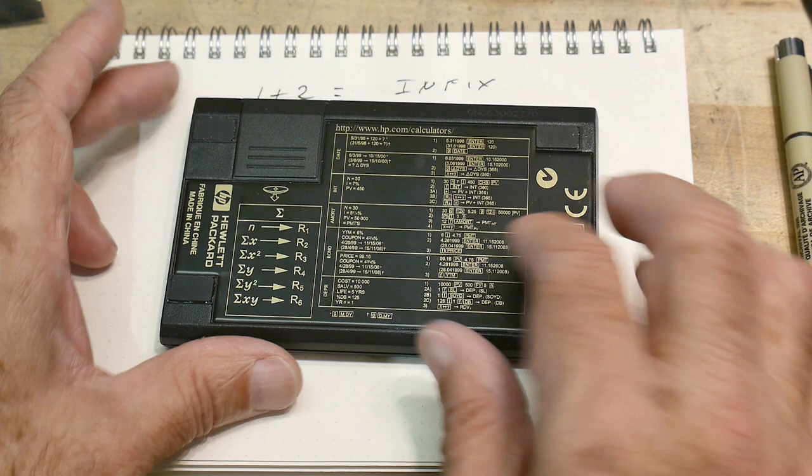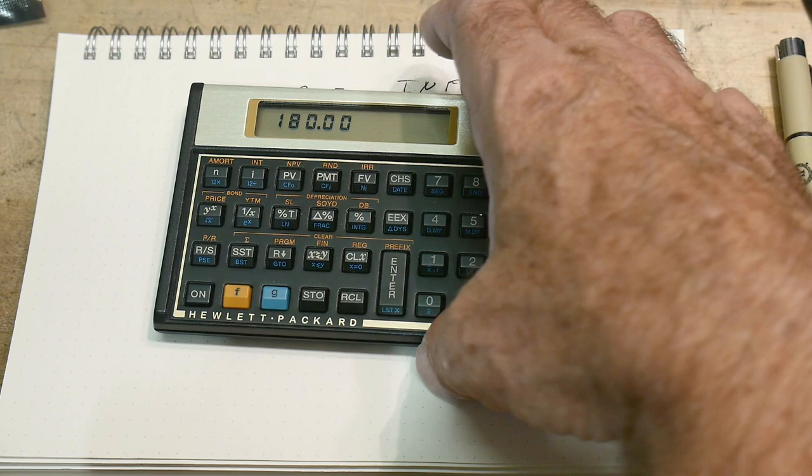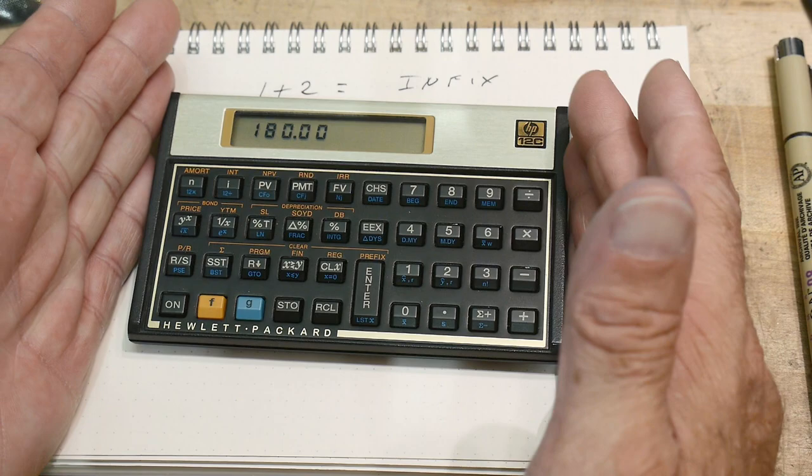But these are now made in China. And it did move to Singapore for a while. But yeah, Corvallis, Oregon is the home of the HP calculator. Alright. So this form factor came around originally as the 11, okay?